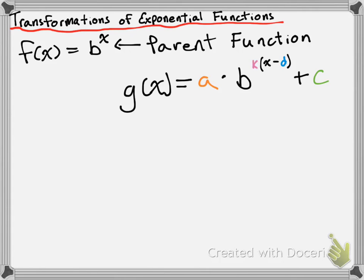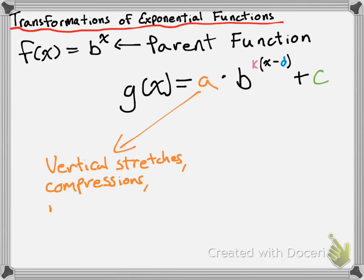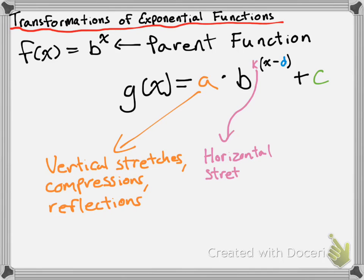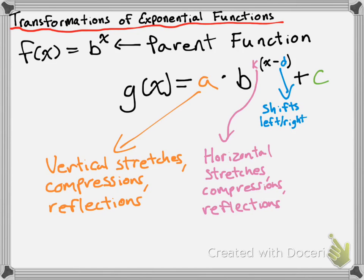What I'm going to do is just point out what each parameter does, but in terms of what values they need to be, you should check your notes for that. The a value performs vertical stretches and compressions and also vertical reflections. The k value does horizontal stretches, compressions, and reflections. The d value shifts the function left or right, and the c value shifts the function up or down.